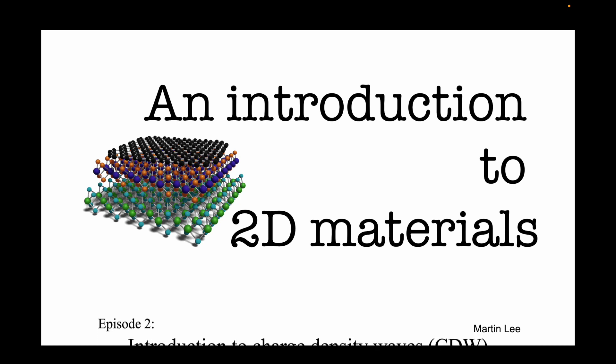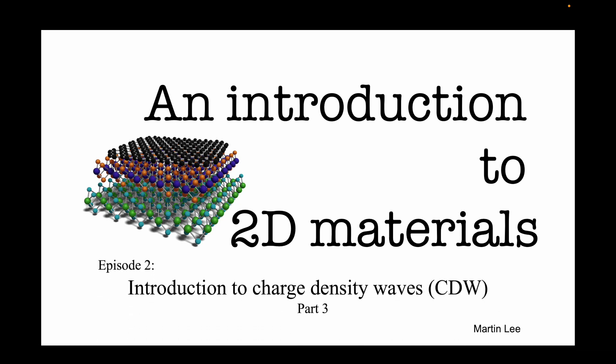In the last video, we looked at the Fermi surface nesting criterion, as well as some 2D materials that clearly violate the criterion, yet still show charge density waves.